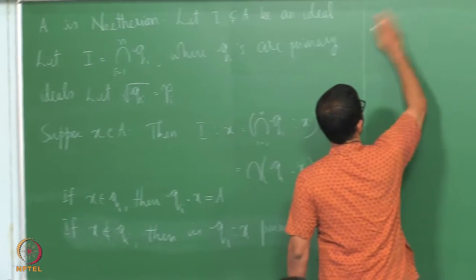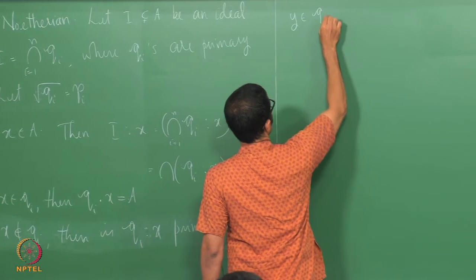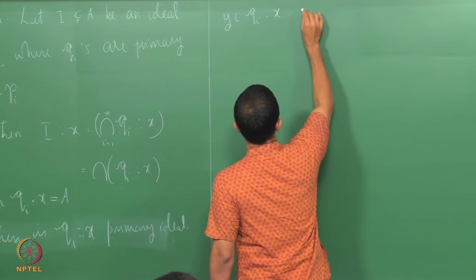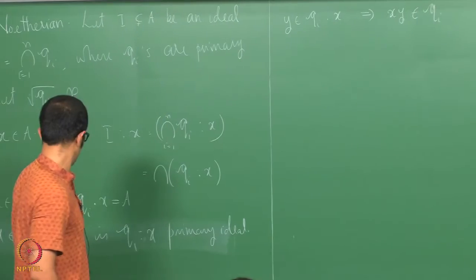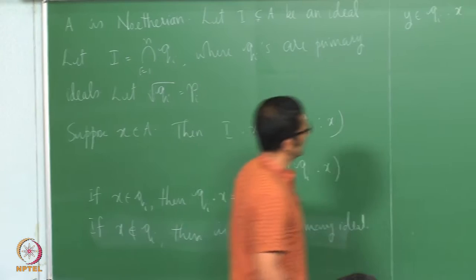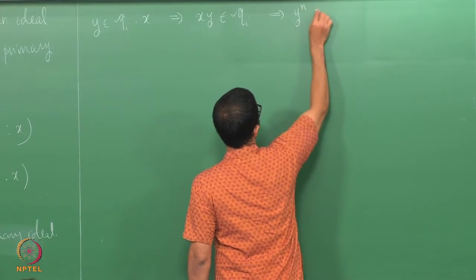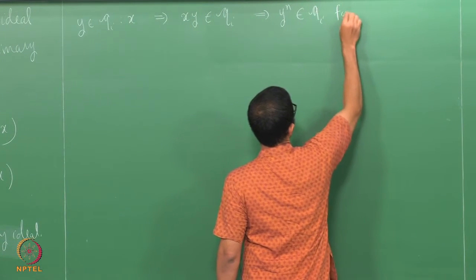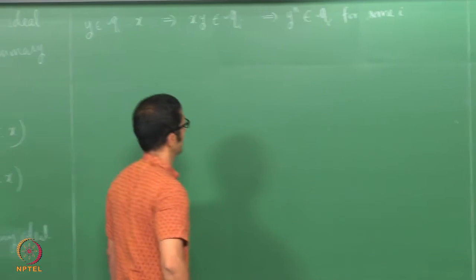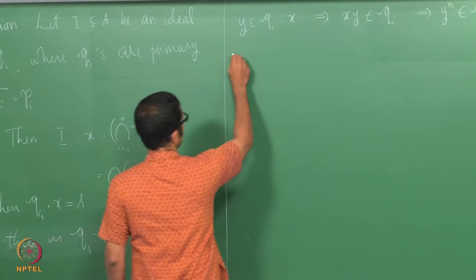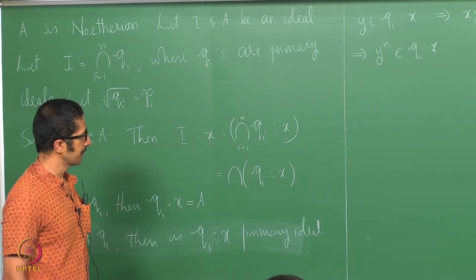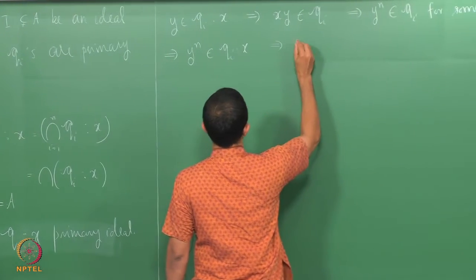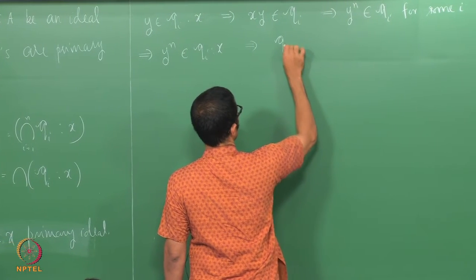Let y belong to q_i colon x. That implies that xy is in q_i, and we are assuming that x is not in q_i, and that implies that y^n is in q_i for some n. So y^n is in q_i colon x because q_i is contained in q_i colon x. Therefore, q_i colon x is primary.